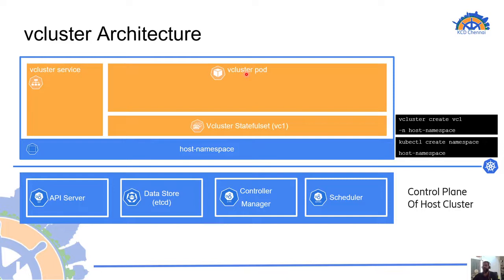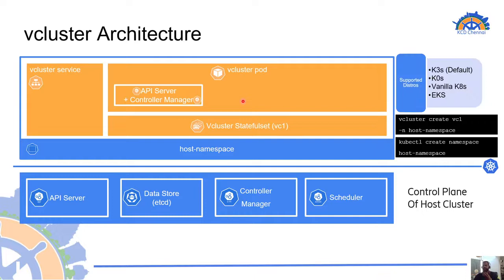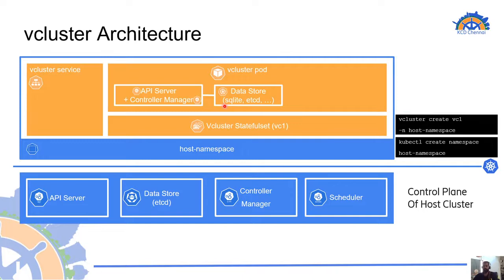The first container is the control plane. This is where we can pick our own supported Kubernetes distribution — like K3s, which is the default, or other supported distributions. It has an API server for any kubectl interaction with the vcluster, and a separate controller manager. The controller manager is hooked up to a data store. By default it is SQLite, and it supports others like etcd. When we write something to this API server inside the vcluster, it writes into a separate data store, which is mounted as a volume to the vcluster pod.